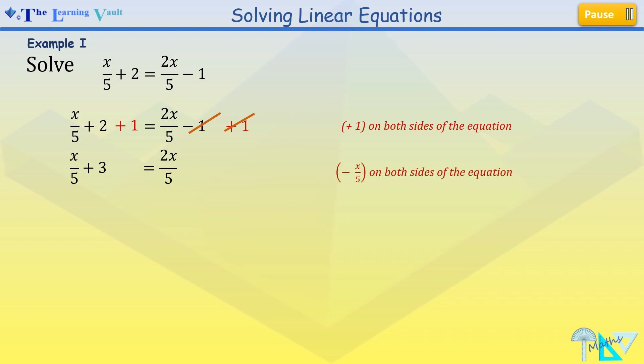Now the next step is to subtract x over 5 on both sides of the equation. So I'm left now with 3 equals 2x over 5 minus x over 5, which I can simplify to 3 equals x over 5.